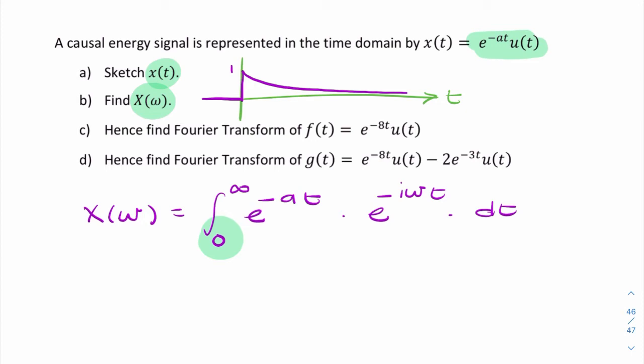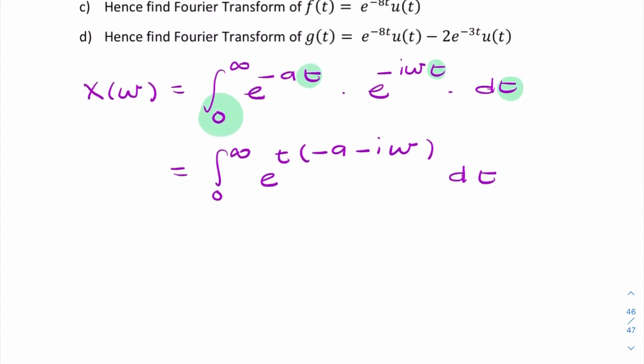So now you've got the independent variable t that we're integrating over. It appears twice here. So it makes sense to add these exponents together. So we'll have integration from zero to infinity e to the power t into minus a minus i omega dt. So the integral of that remains the same. Let's write it like this. A plus i omega. And then we divide by, let's call it a plus i omega. And put a minus sign. That's from zero to infinity.